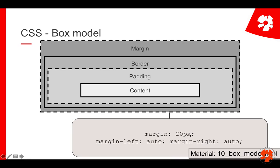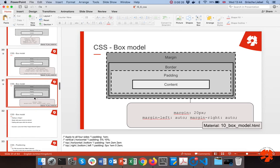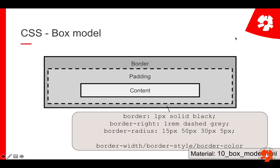For margin, you can similarly use 20 pixels applied to all directions. You can also use 'auto', which basically tries to align elements with other elements. Now let's look at the borders.